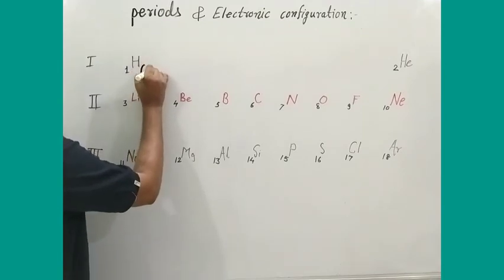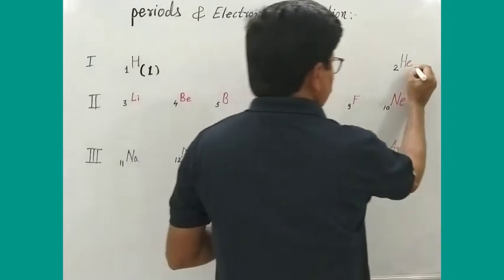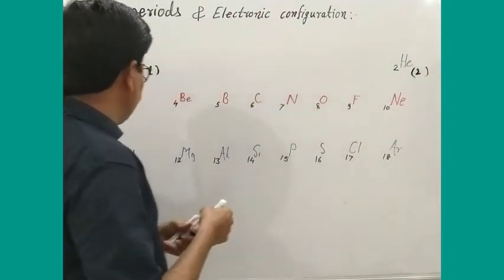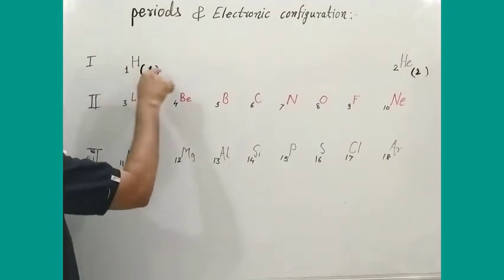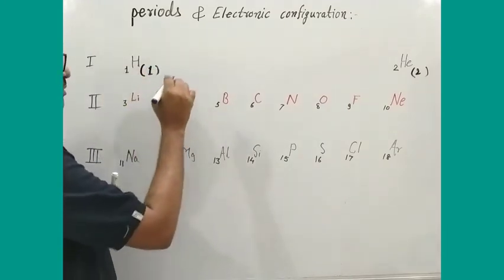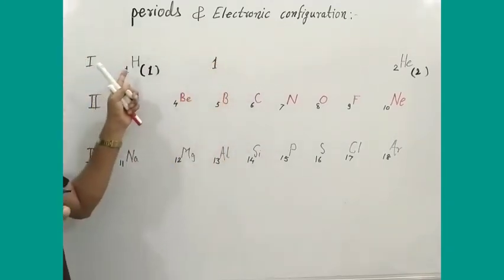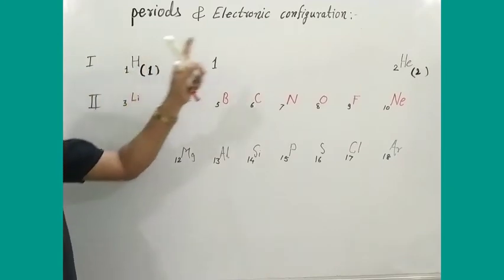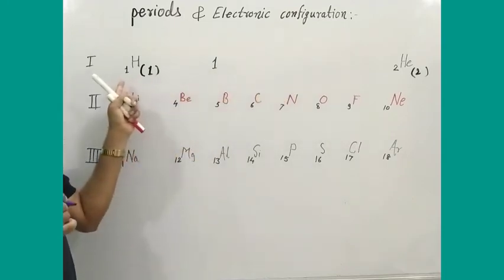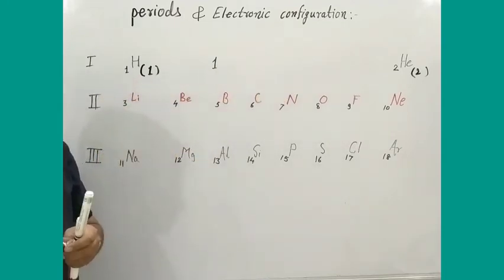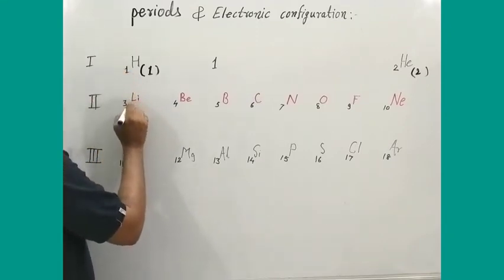The electronic configuration of hydrogen is 1. What is the similarity between the first period elements? The first period elements contain only one shell. For hydrogen and helium, the number of electrons present in their outermost orbit increases by one.